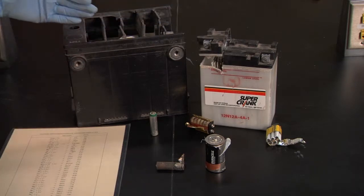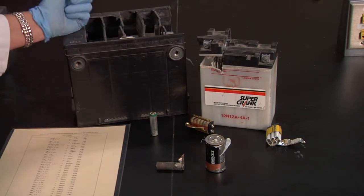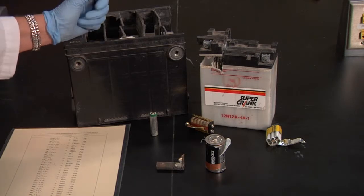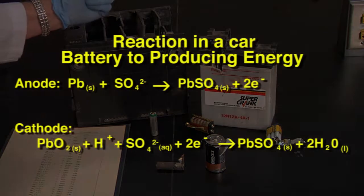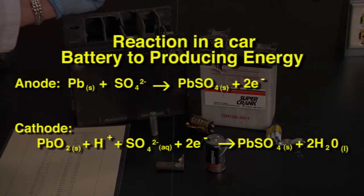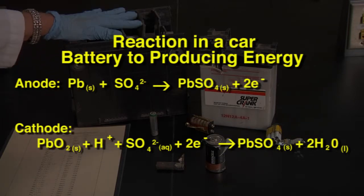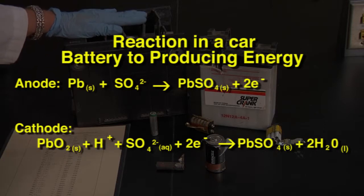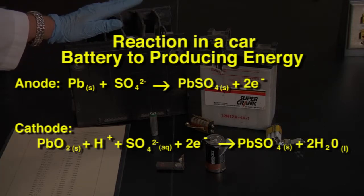So what happens in your car is as you're using your battery to play the radio, for example, the lead and the sulfuric acid inside are producing an electrical current. And so the lead is going from lead to lead oxide.